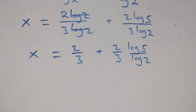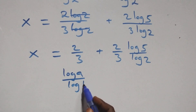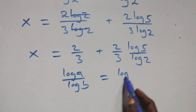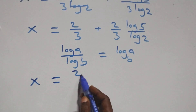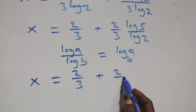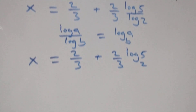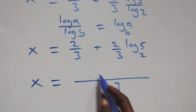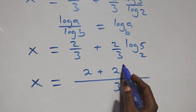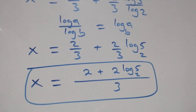When we apply the change of base formula — when we have log A over log B, this is the same as log A to base B — we have x equals 2 over 3 plus 2 over 3 times log 5 base 2. Combining as one fraction, x equals (2 plus 2 log 5 base 2) all over 3.